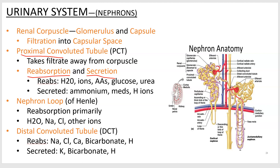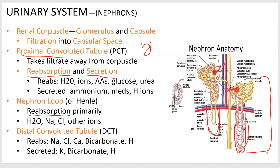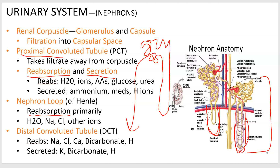Then we go down into this big loop called the nephron loop or loop of Henle, which descends into the medulla — sometimes very deep. This is where you do a lot of reabsorption and concentrate the urine, especially with the deep ones. After the loop you come back up to the distal convoluted tubule. So the order is: capsule, proximal convoluted tubule, loop of Henle, distal convoluted tubule, and then the collecting duct on the next slide.